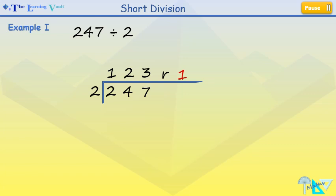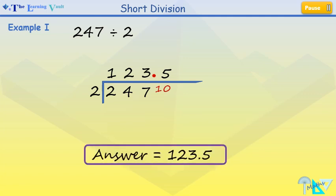With division with remainder, we'll just write R1. But since we're giving our answer in decimals, we'll bring the remainder 1 down and place a decimal point after the 3 above. To continue with the division, we add 0 next to remainder 1. This becomes 10. Now, 10 divided by 2 is equal to 5. No further remainder. So, the final answer is 123.5.